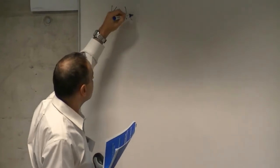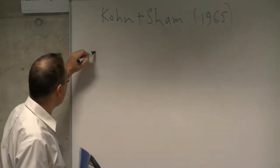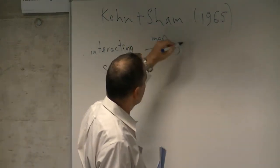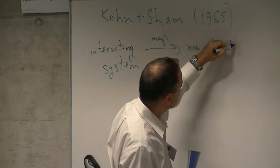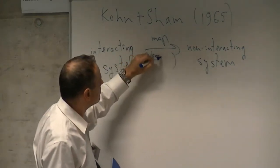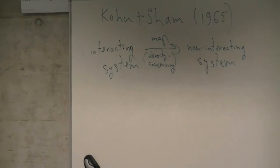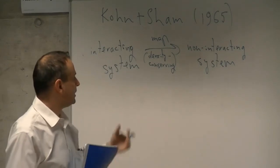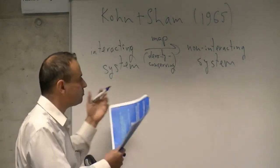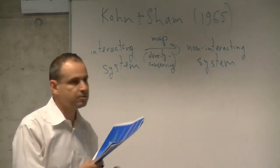The starting point is something already mentioned several times, especially on the first day: what Kohn-Sham achieved in 1965 is called a map — a map between the interacting system and the fictitious non-interacting system. When I say map, I mean that it's density conservative: the ground state density of the real system is the same as the ground state density of the fictitious non-interacting system. It's not at all obvious that we can map every system that way, and that's part of the magic of the Kohn-Sham construction.